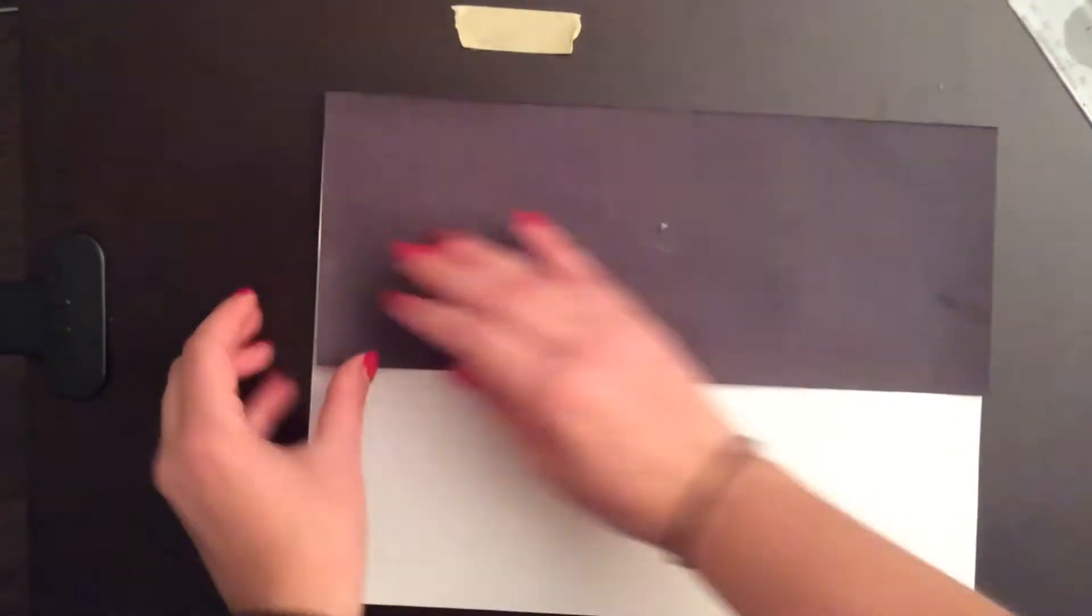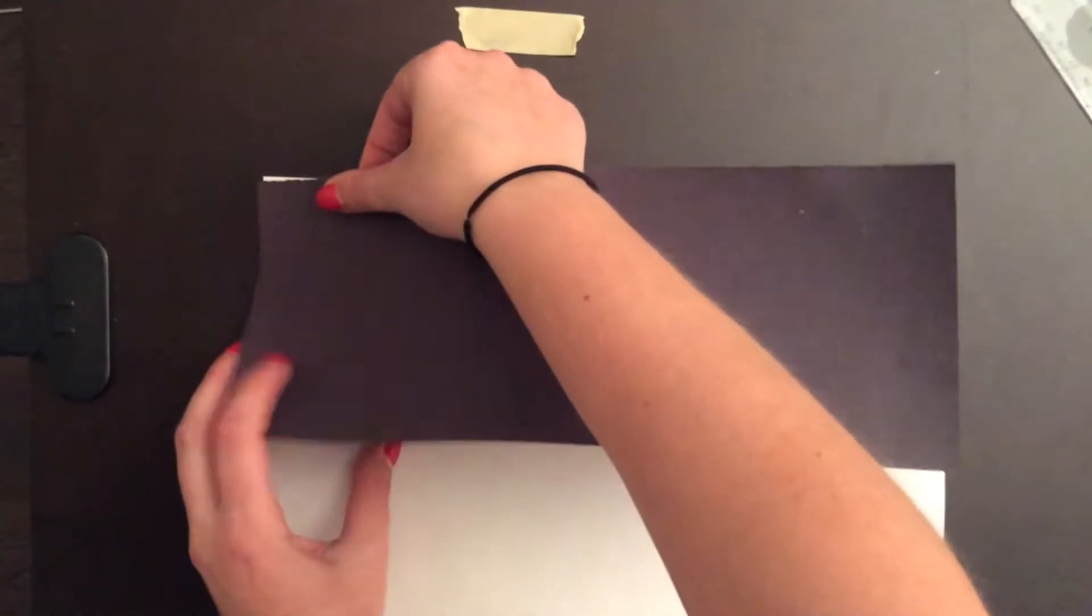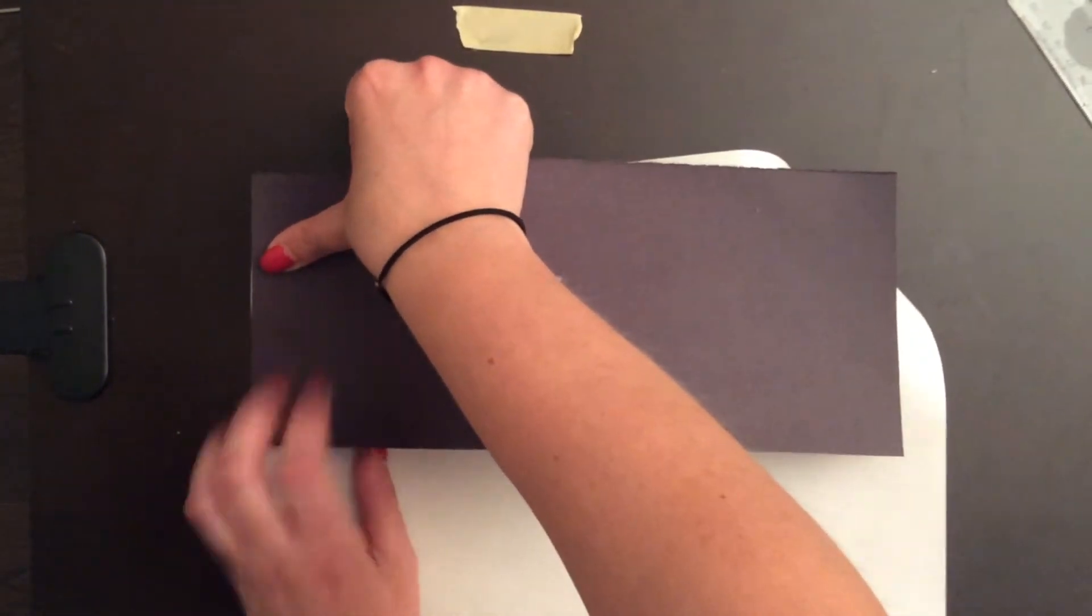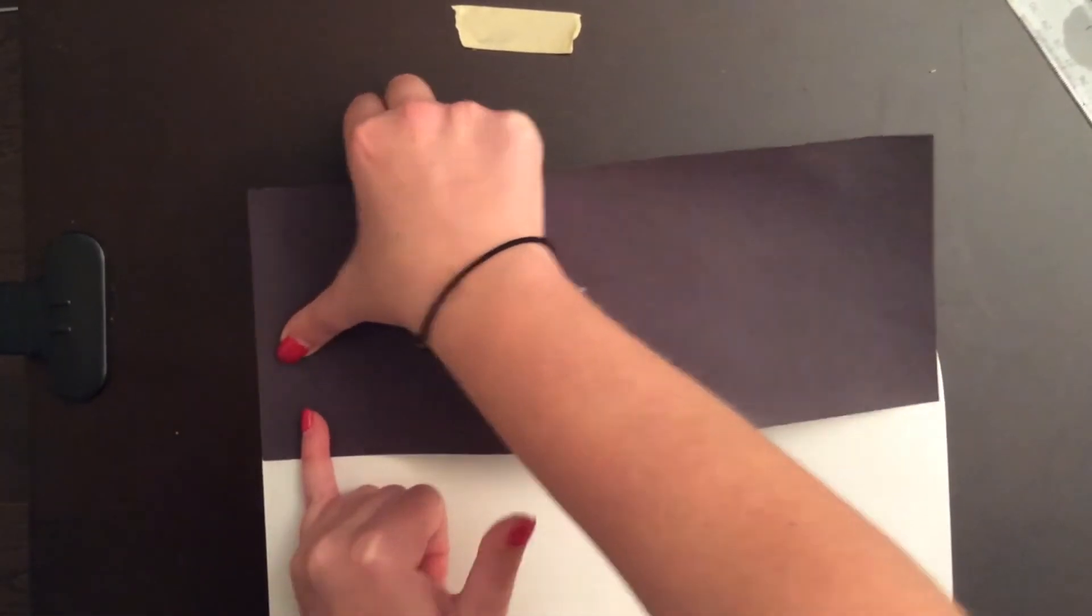Half of your paper should be black and then half of your paper should be white. Now you're going to see it is difficult to glue it down and make it perfect, so it's okay if it's not perfect.